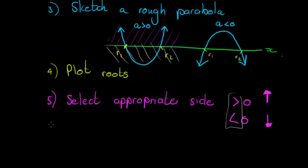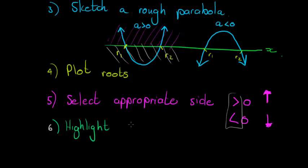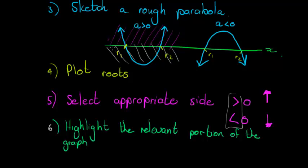Next, highlight the relevant portion of the graph. If you're using the top part of a positive parabola, highlight the outside legs. If you're using the top part of a negative parabola, highlight the inside curve. If you had a positive parabola and are using the bottom part, use the inside curve. If you have a negative parabola and are using the bottom part, use the outside legs.